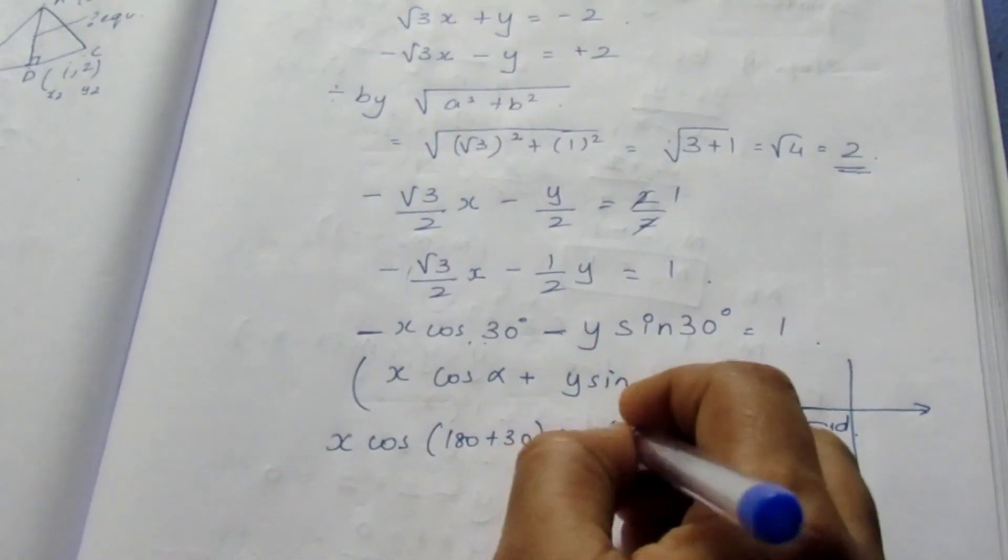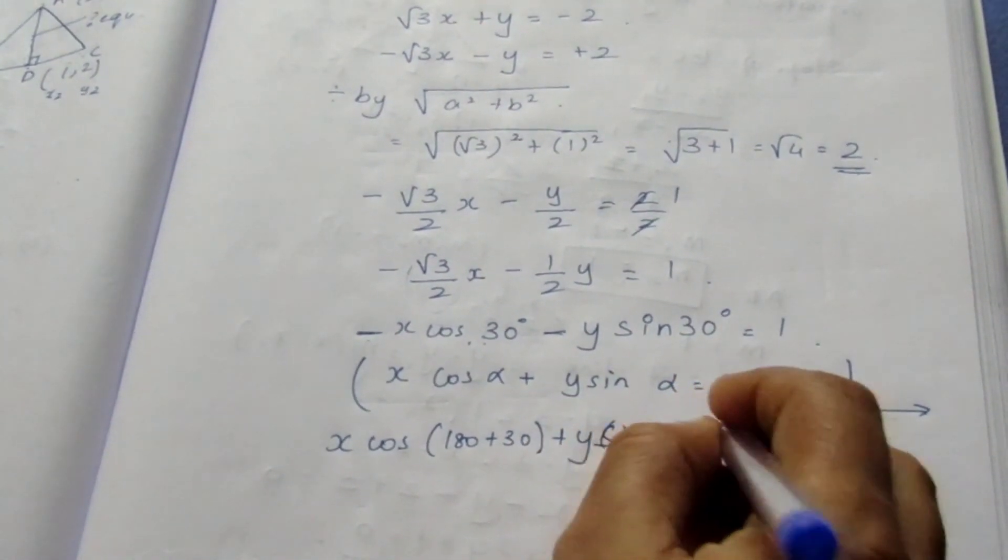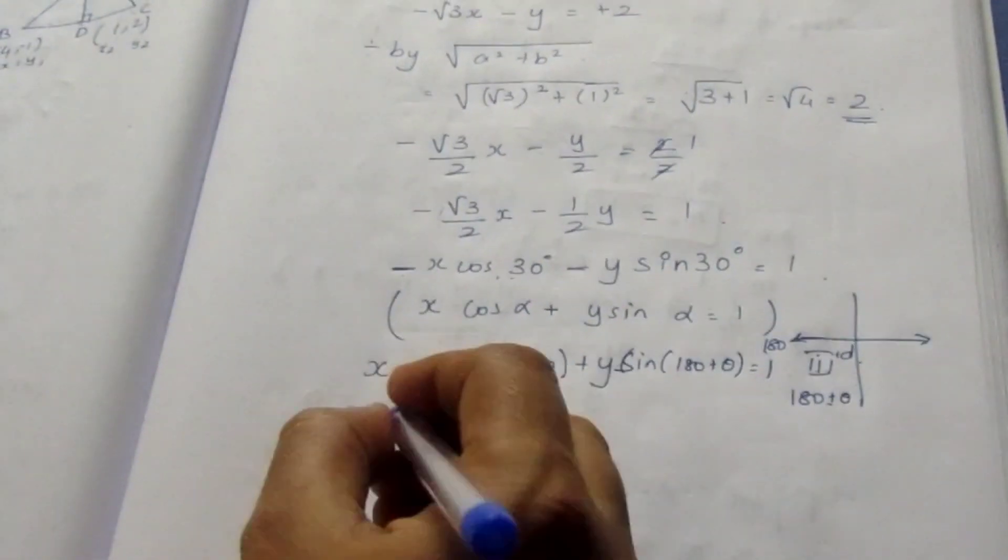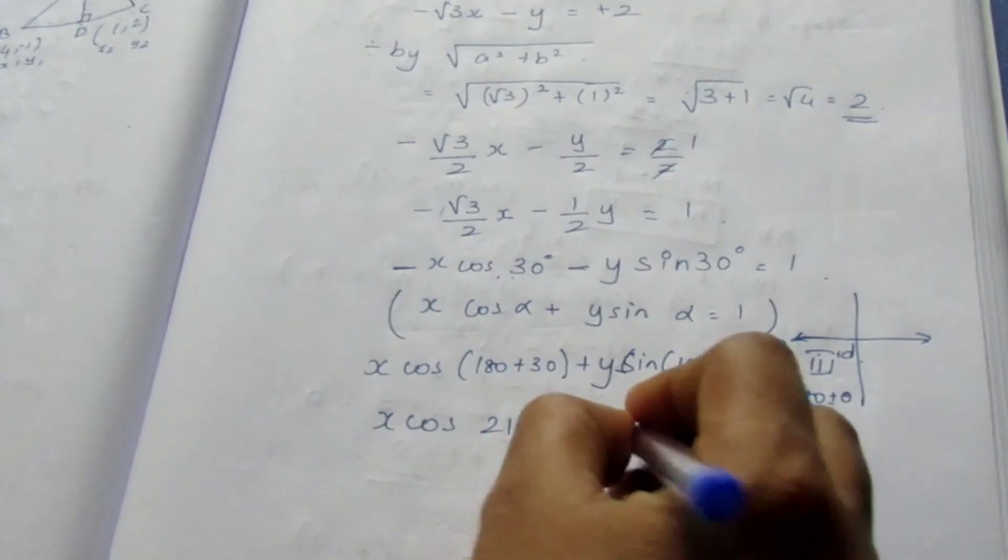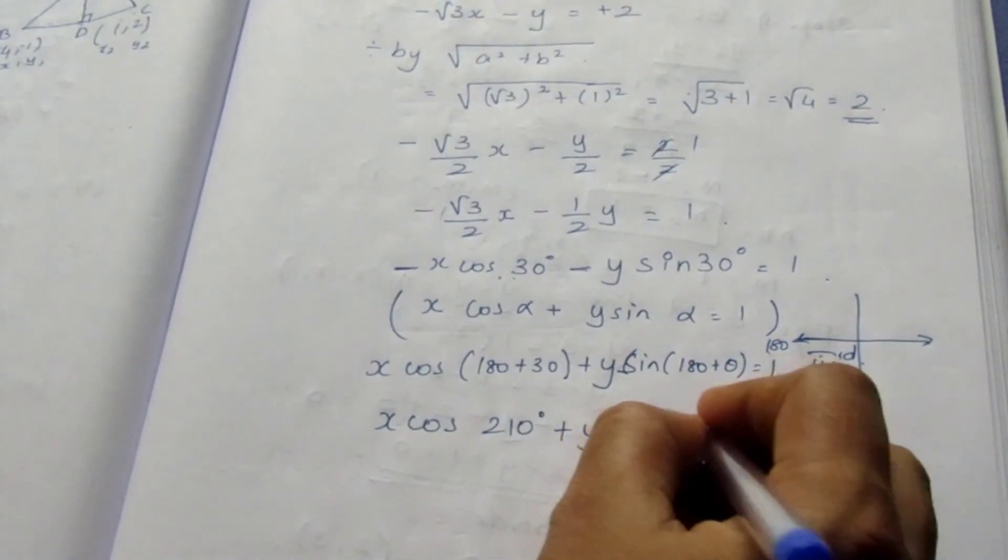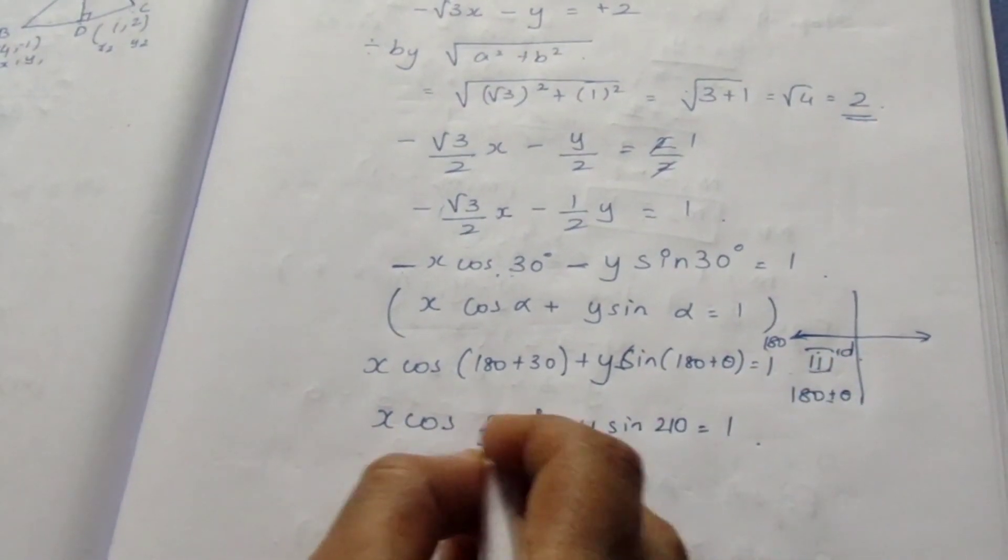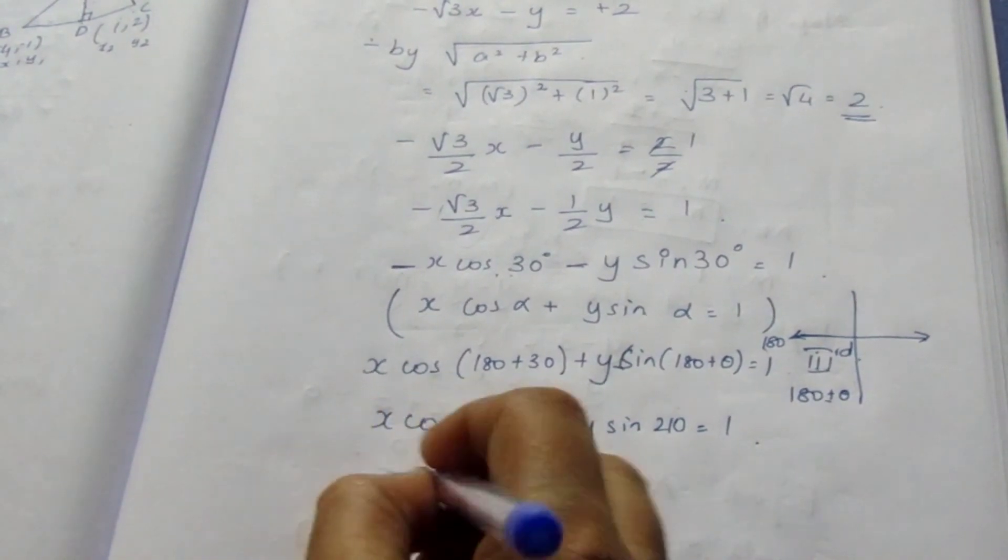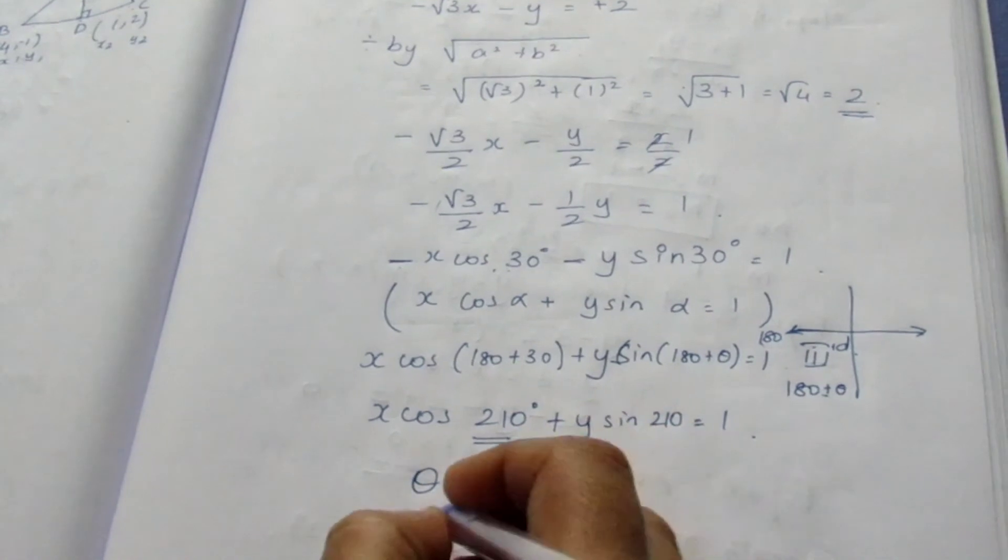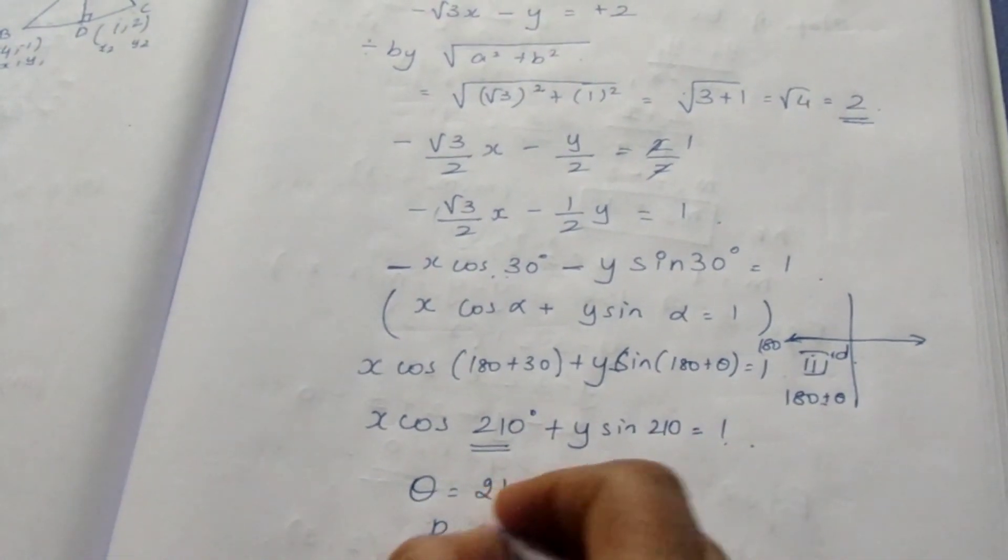Sin 180 plus theta equal to 1. This becomes x cos 210 plus y sin 210 equal to 1. Your theta value is 210 and p value, this is your p value, p value equal to 1.